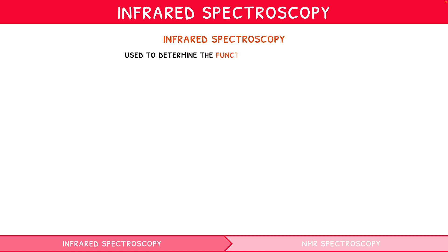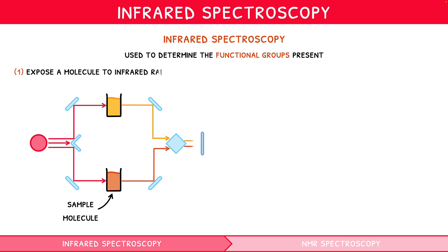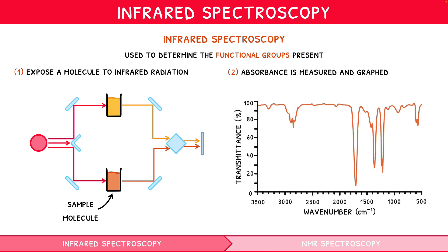Infrared spectroscopy is very useful to determine the functional groups present within a molecule. The process involves exposing a molecule to infrared radiation of 400 to 4000 wave numbers, given by the unit centimeter to the minus one. The absorbance of this radiation can then be measured and graphed to produce graphs like this, where each trough represents absorbance by a functional group.